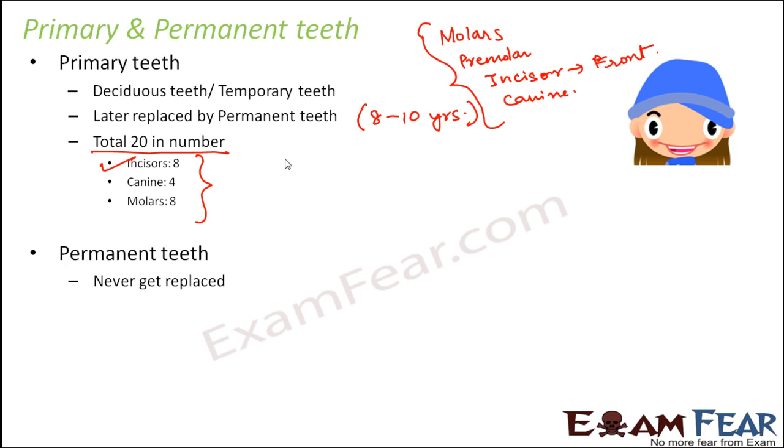In case of permanent teeth, they never get replaced. They will be there forever. However, they might also fall if you do not take proper care of teeth. They might fall quite early than expected, but then they never get replaced.